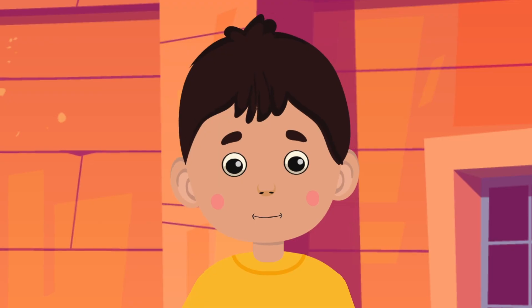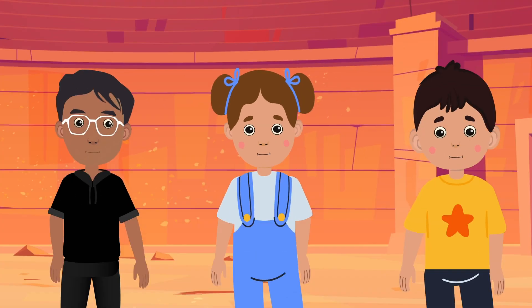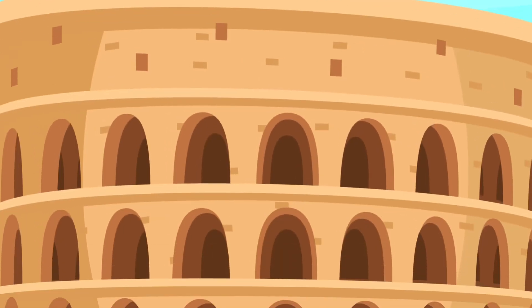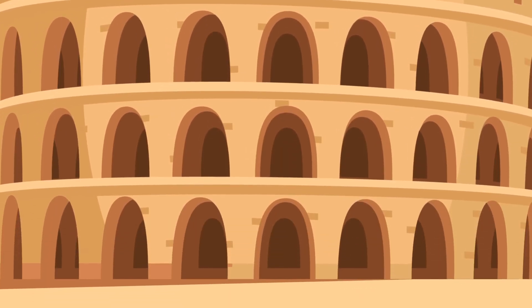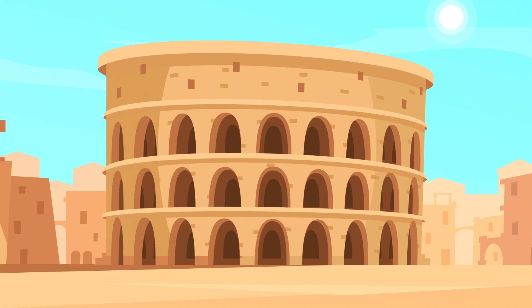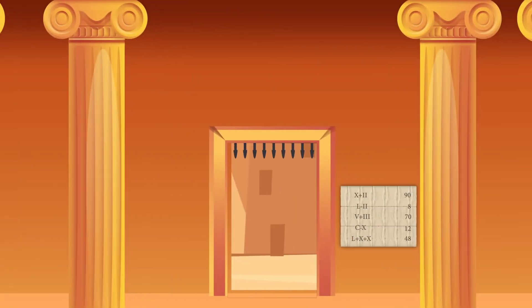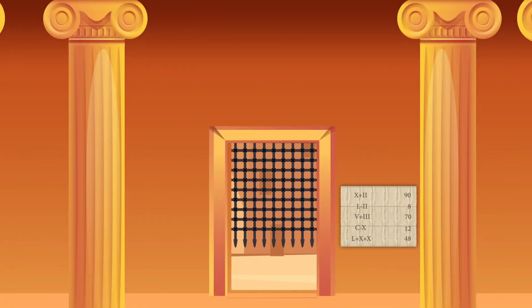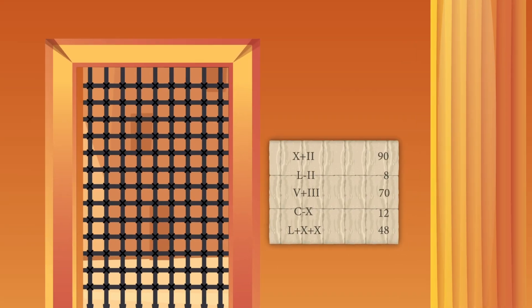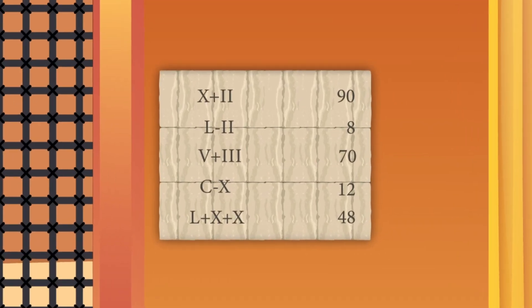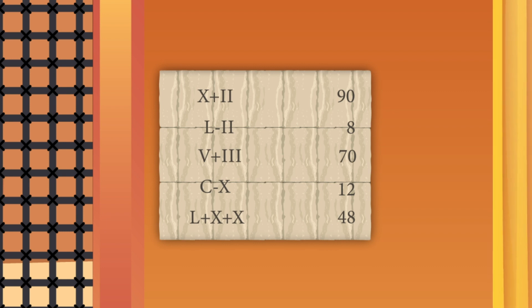Banu, Peter and Anna are visiting the famous Roman Colosseum. Suddenly the gates close and they see a puzzle on the wall which they must solve to escape.